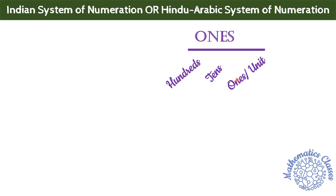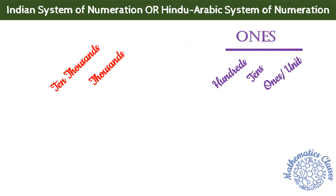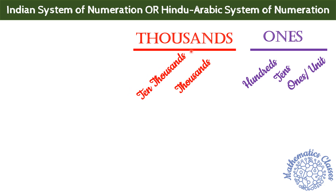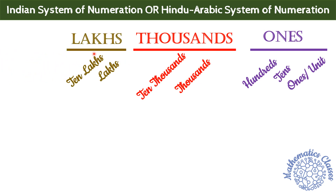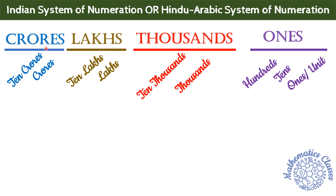We move from left to right. The first period is Ones, जिसमें तीन places include होते हैं — Ones, Tens, and Hundreds। The second period is Thousands, जिसमें दो places हैं — Thousands and Ten Thousands। Moving further left, we have the third period of Lakhs, consisting of Lakhs and Ten Lakhs। Then the last period is of Crores, which includes Crores and Ten Crores। We use commas for separating the periods, जो हमें help करता है numbers को read और write करने में।